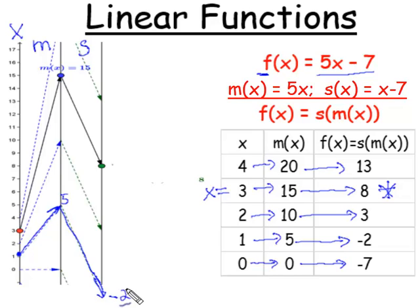Similarly, m applied to 2 gave us the number 10. s applied to 10 gave us the number 3. We subtracted 7 from 10, we got the number 3. We can see that the number 3, when m was applied, gave us the number 15. That was m, and then subtracting 7 from 15 gave us the number 8.